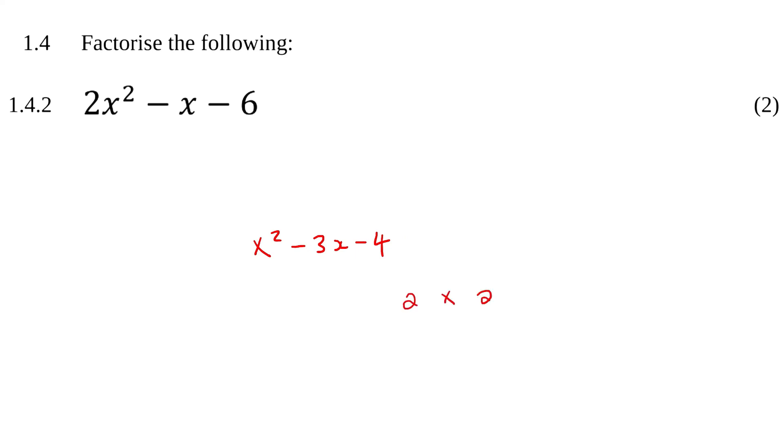So you could say 2 times 2, 1 times 4, and then you look at those, either these ones or these ones, and you see which ones can help you to make that number.